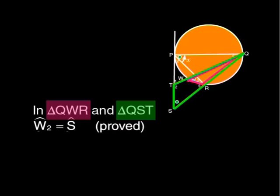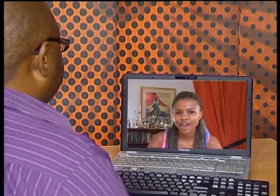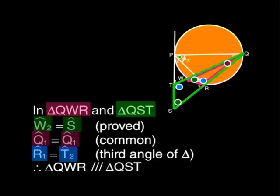Can you get their angles equal to each other? You've just proved that W2 equals S. That's one pair of equal corresponding angles. Q1 is common to both triangles. That's a second pair of corresponding angles that are equal. How do we know that the third pair will also be equal? They have to be equal because the sum of the angles of each triangle is always 180 degrees. So the triangles are similar. You've got it.